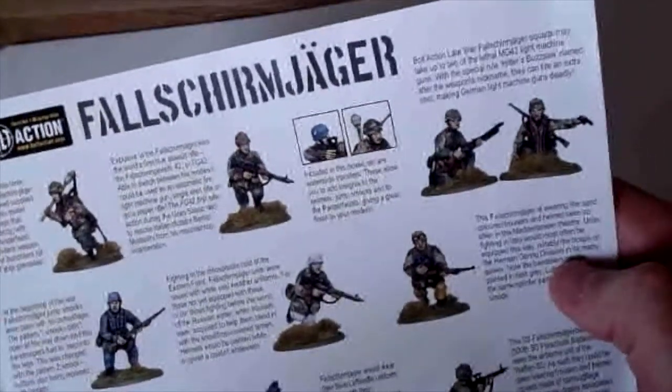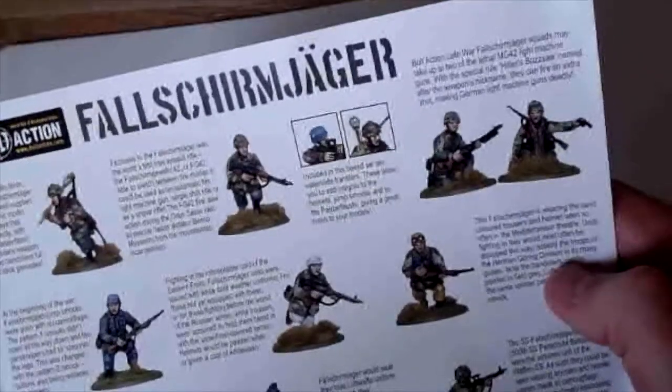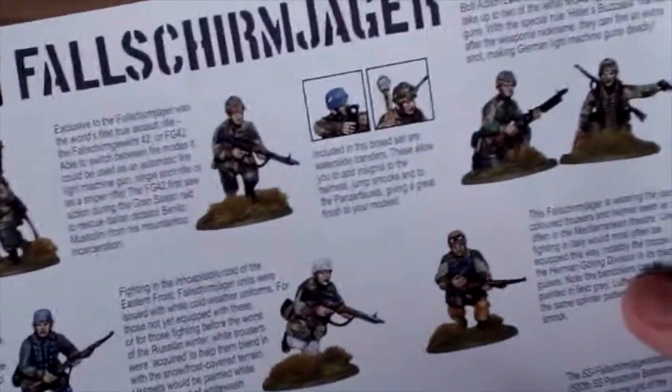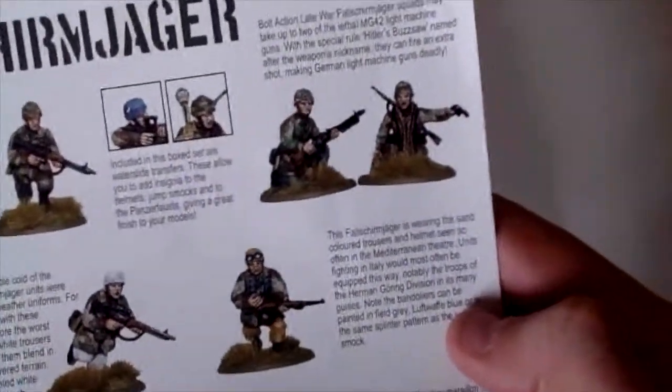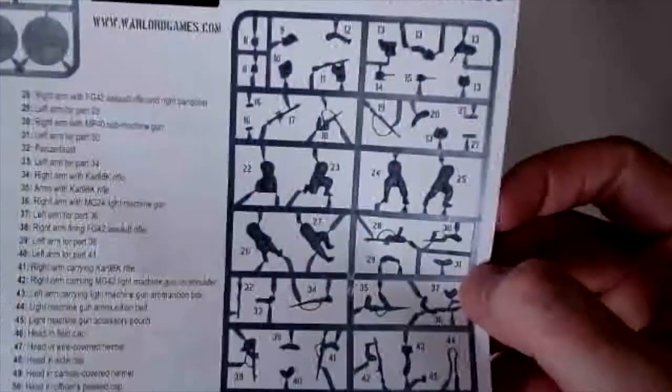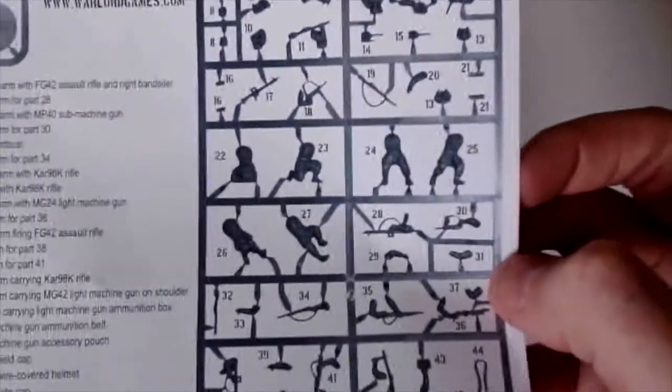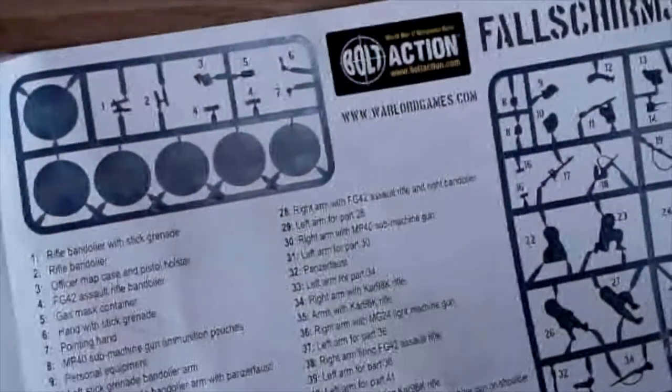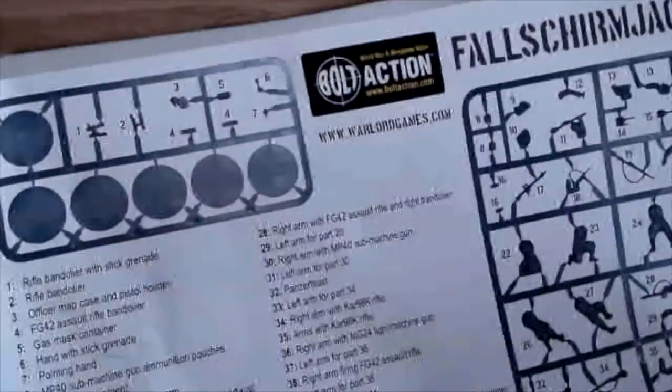It tells you how to paint them and how to make them look from different periods of the war. At the beginning of the war, the jump smocks were plain with no camouflage. I really do like these document sheets that Warlord put in. They do this for all their boxes.